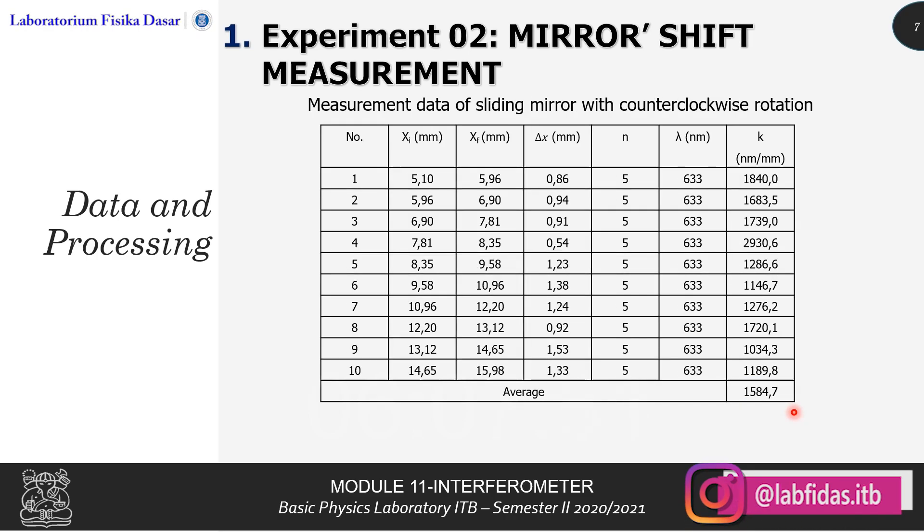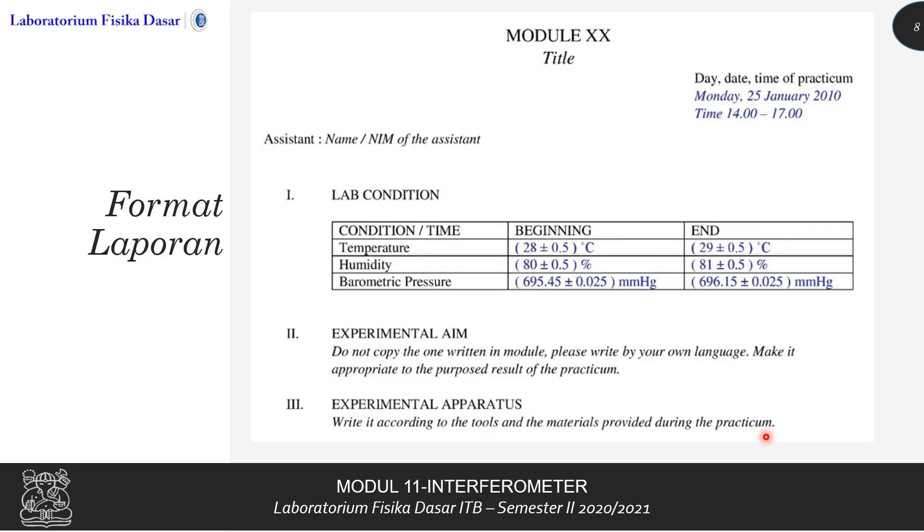After that, we also do it with the second condition, the measurement of data of the sliding mirror with the counterclockwise rotation of the micrometer screw gauge. Xi, xf, delta x, n, lambda, and k. Sum it up, divide it by all the data points, and we get the average of k, just like the one before. Okay, so that's it for the data processing on module 11, interferometer.